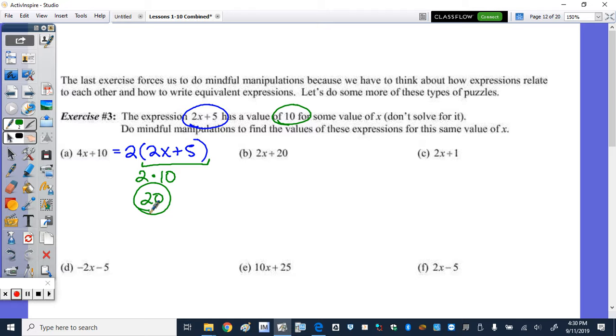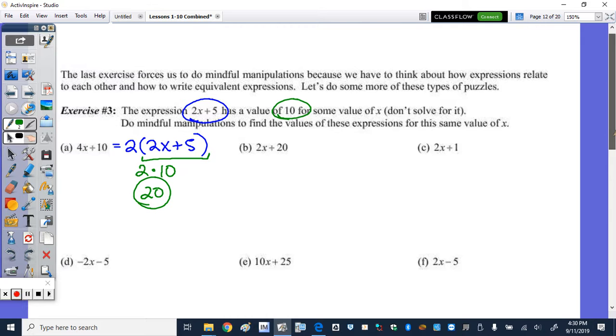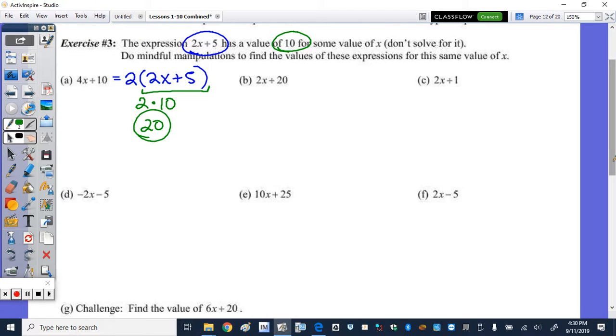Another multiple would be D and E. So if we look at E, when you multiply the 2x plus 5 times 5, we get 10x plus 25. So this is really, since 2x plus 5 is 10, 5 times 10, this one is 50.